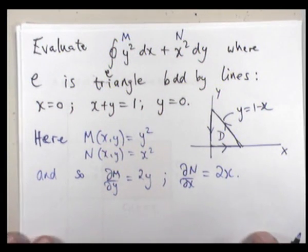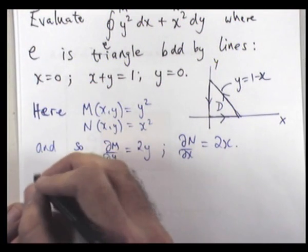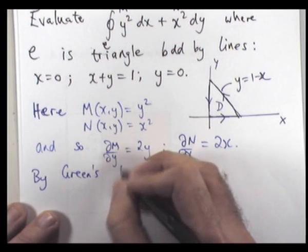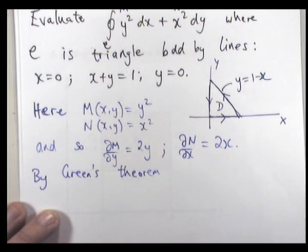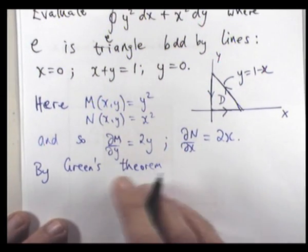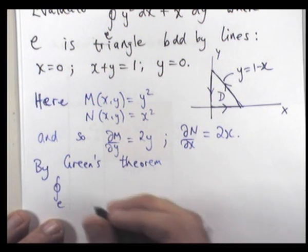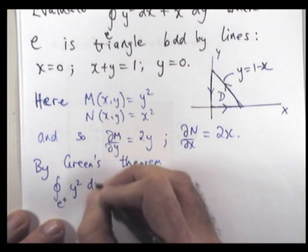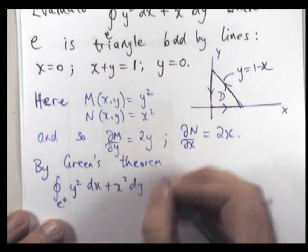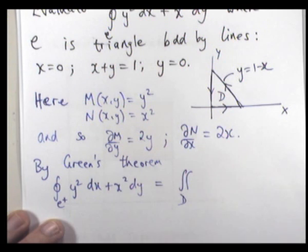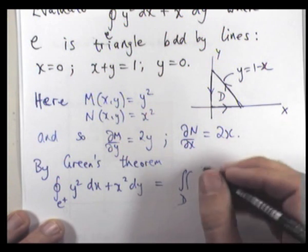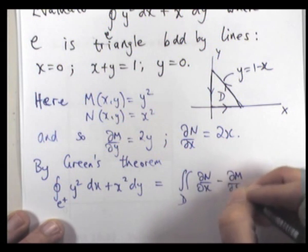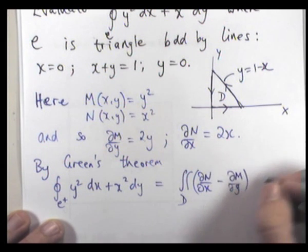So by Green's theorem, and again this is Green's first theorem I'm using, not Gauss's divergence theorem in the plane. Okay, we have the following. The line integral, where C has positive orientation here, it's the double integral of dN/dx minus dM/dy over our two-dimensional region.